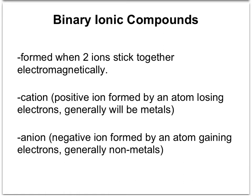Just the name binary implies two, like a bicycle has two wheels or binoculars have two eyepieces you can look through. So the prefix bi means two. Ionic implies that ions are involved. Basically this is formed when you have two ions sticking together electromagnetically. They have two opposite charges.